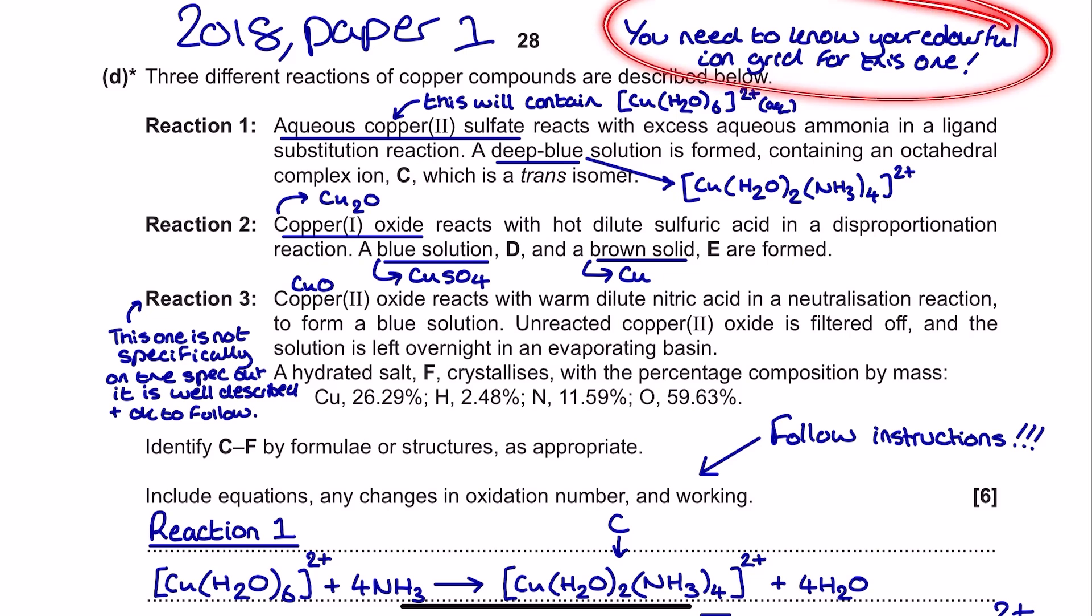You do need to know your colorful ion grid for this one. If you've not got that OCR resource, it is an absolutely amazing sheet of information, and I'll put a link to my video for the copper 2 ions and all of the reactions you need to know for that, which also includes a link to that OCR resource down in the video description. So here I've got three distinctive reactions, and I need to describe each of them with enough information to provide details about structures C through F.